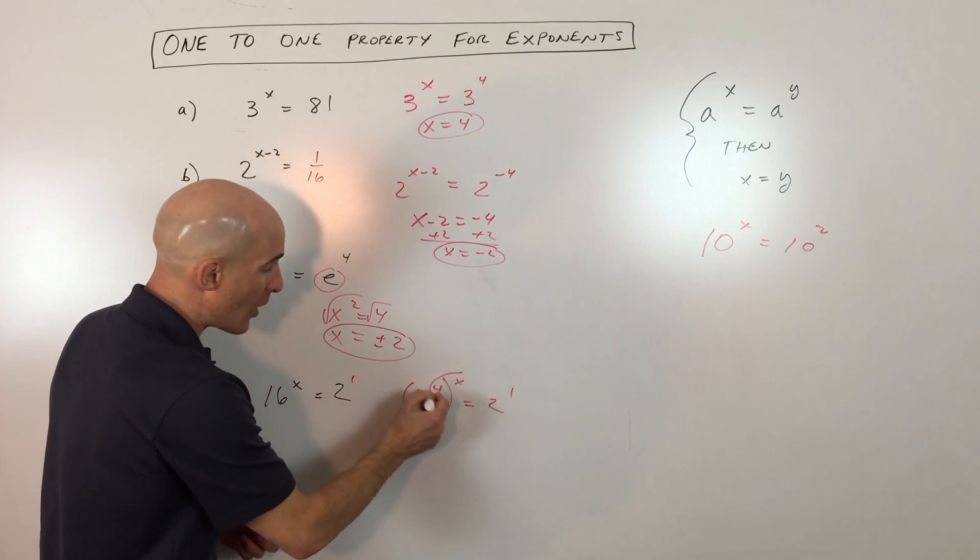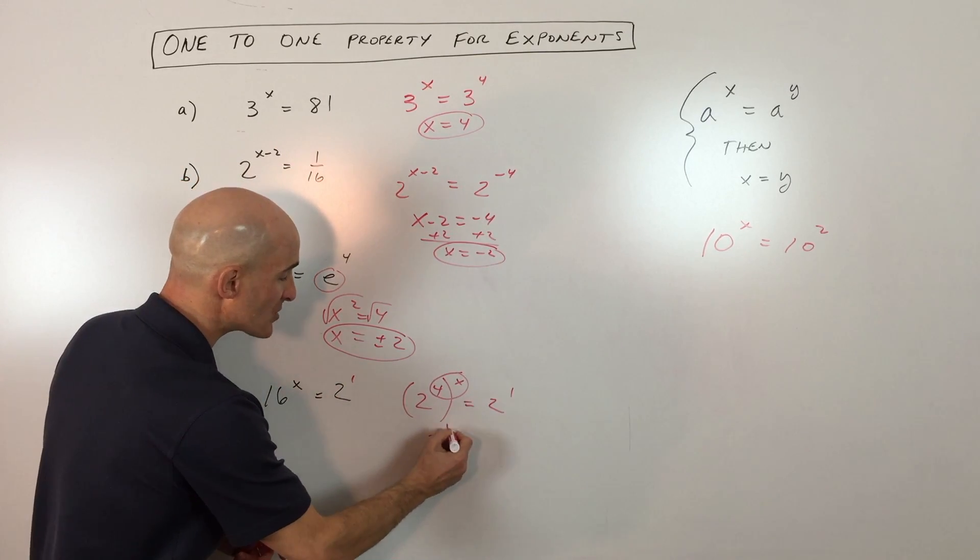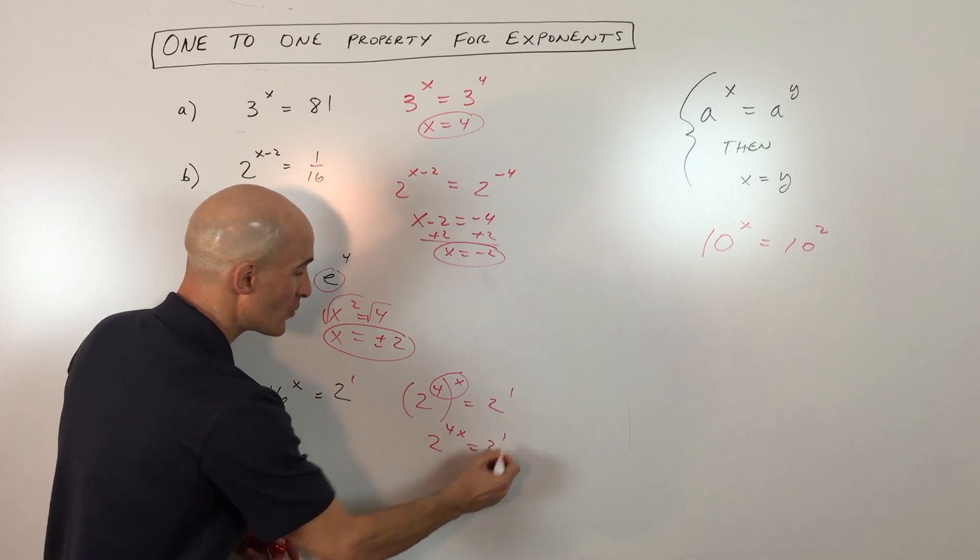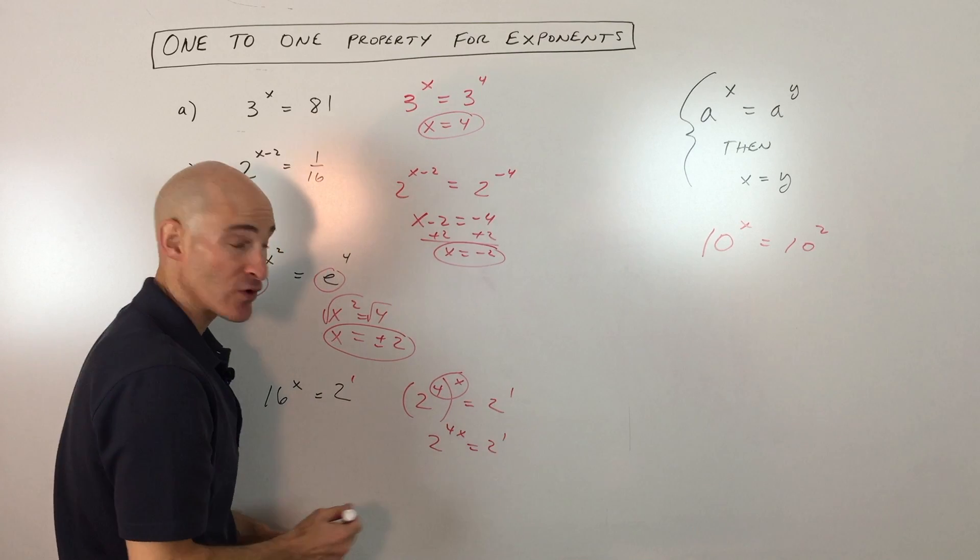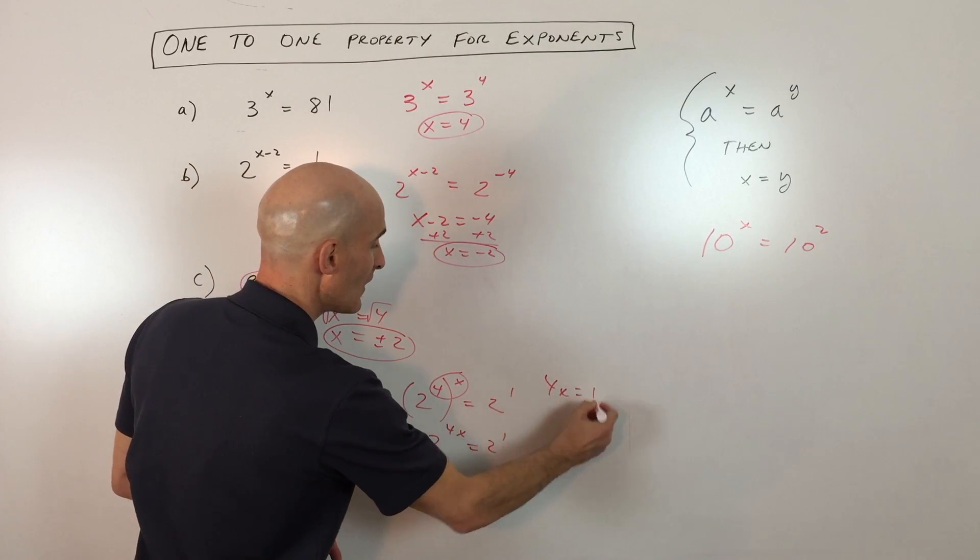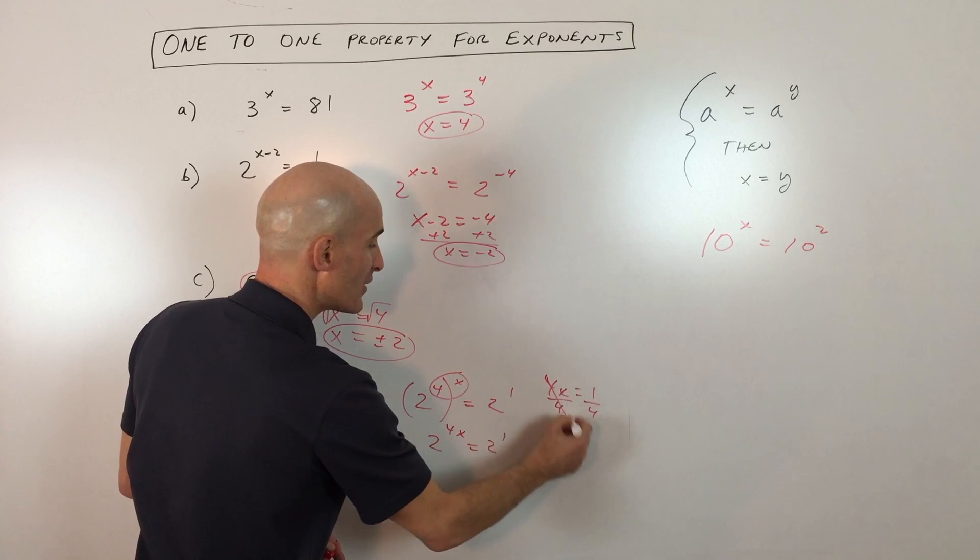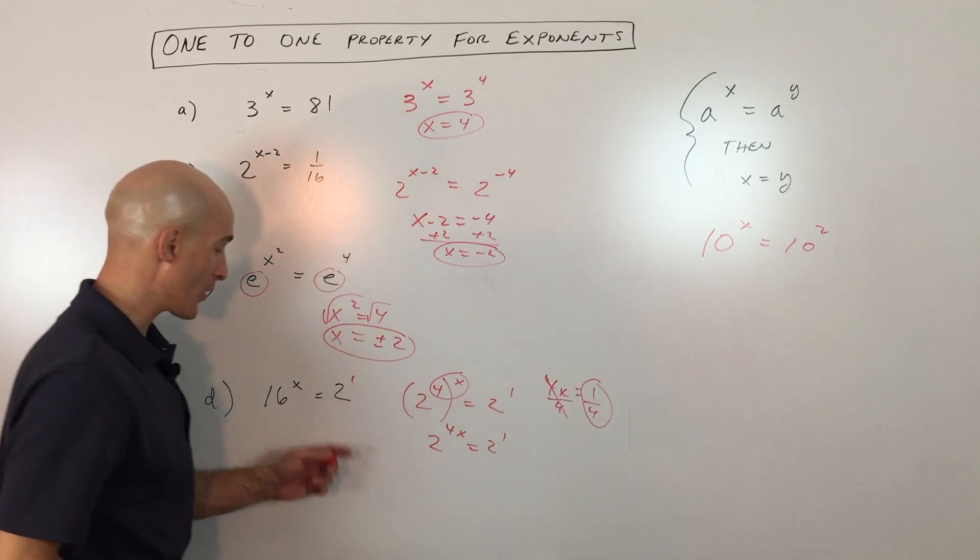And then now when you have a power to power, you multiply those exponents. So it's 2 to the 4x equals 2 to the 1st. Now you can see that if we set the exponents equal to each other, 4x equals 1, divide both sides by 4, and you can see that x is going to be 1/4th.